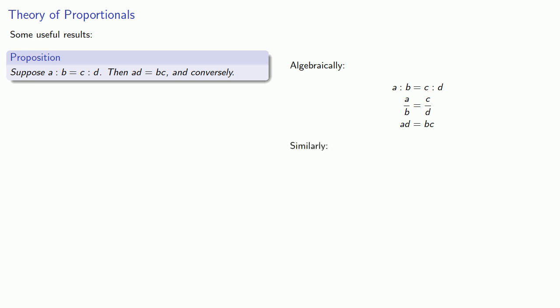Conversely, if we have ad equal to bc, we can work our way backwards to the original proportionality.